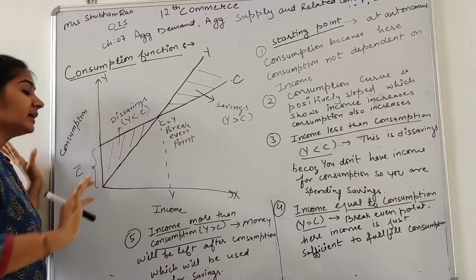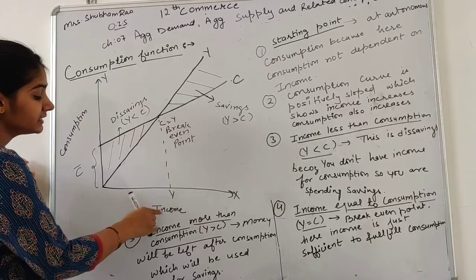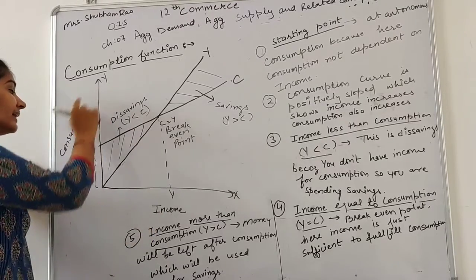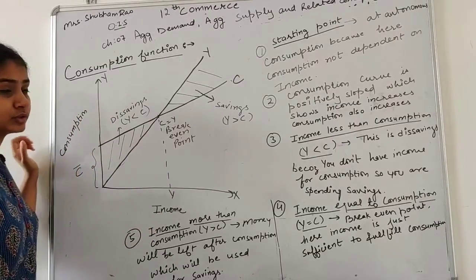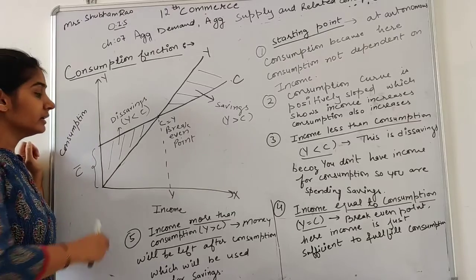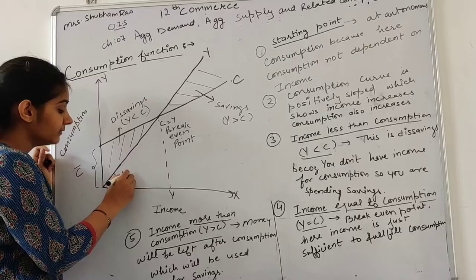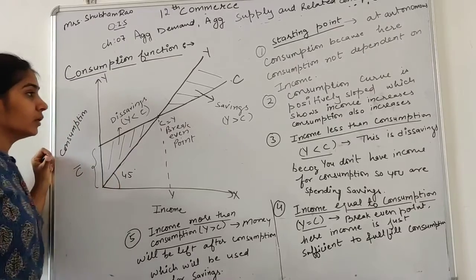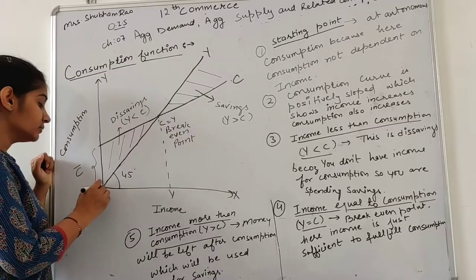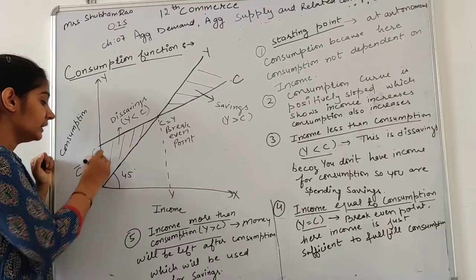Now, I have made a graph. I have been making x-axis as the income, we have decided y-axis as the consumption. We are scheduled to draw two curves: the Y equals Income curve, which is called 45 degree line, and the consumption curve.